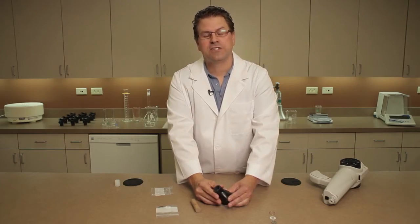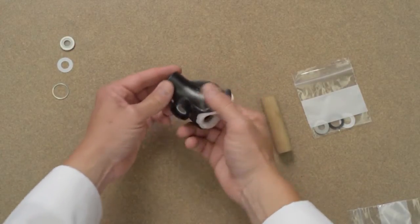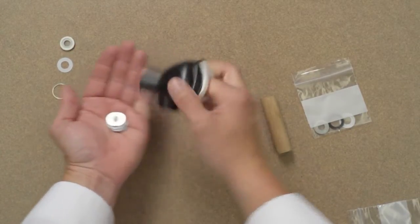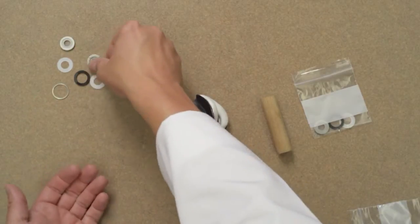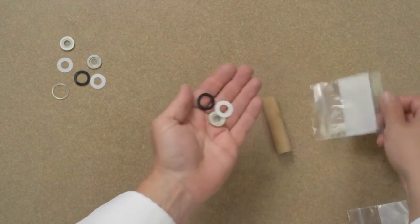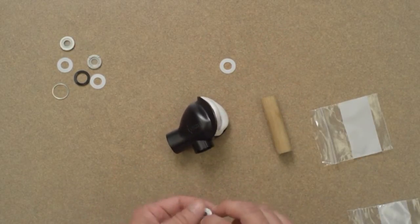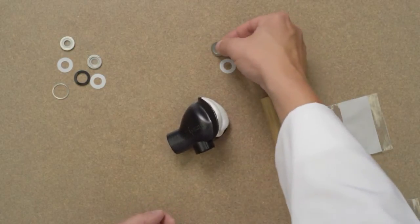Changing the exhale check valve is a similar process. Remove the exhale valve from the mask and lay out the new parts. We have three parts for the exhale check valve that are inserted in the following order: the Teflon washer, the check valve body, and the retainer washer.